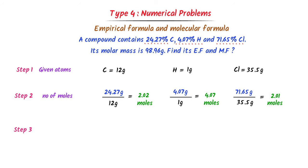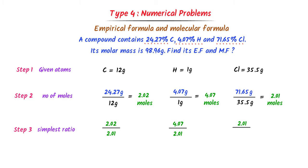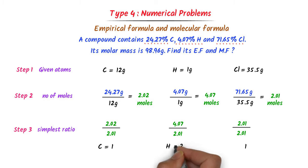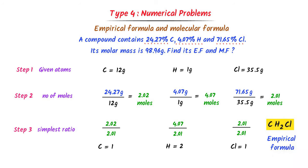In the third step, I find the simplest ratio. The smallest number is 2.01. I divide all values by 2.01 and get 1, 2, 1. The ratio of carbon is 1, hydrogen is 2, and chlorine is 1. Thus the empirical formula of the compound is CH2Cl.